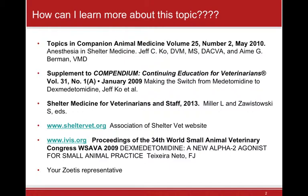People ask where to learn more about this. The shelter vet website has many protocols. There are a couple good articles — if you Google Jeff Coe, he's a colleague and anesthesiologist at Purdue who did a lot of those studies. The IVIS site, IVIS.org — International Veterinary Information Society — is a free site with a plethora of textbooks and articles, free even without academic access. And Zoetis, formerly Pfizer, makes dexmedetomidine — your local representative is a wealth of information.